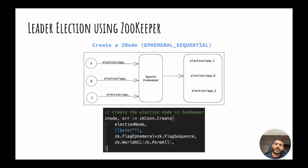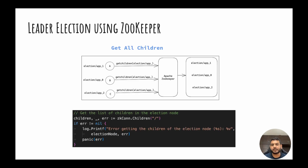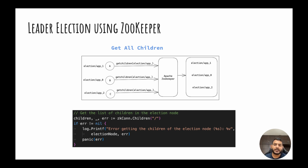Now that we have Z nodes, we need to know which node has the smallest number. This is the third step — every node fetches all the children of that prefix path to see what nodes exist in the system. The node which has the smallest number will become the leader. In this case, B will become the leader. From the Golang code, we use the children method from the SDK passing a path — it returns all the children, which you iterate over to find the smallest number and take the leadership role.